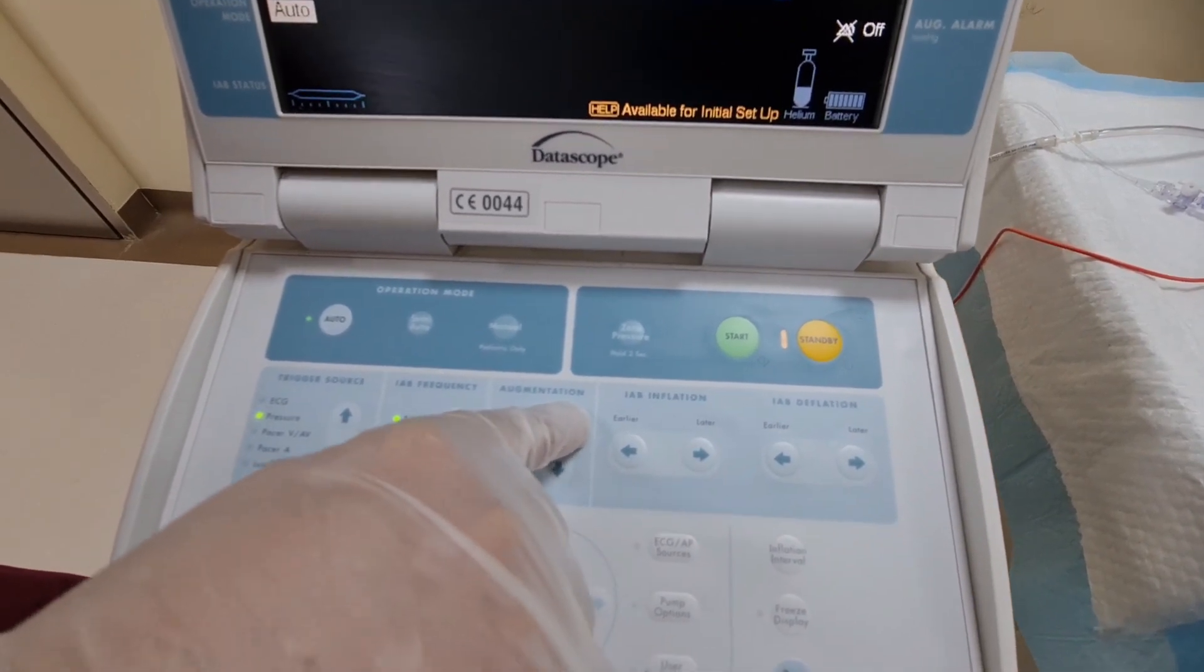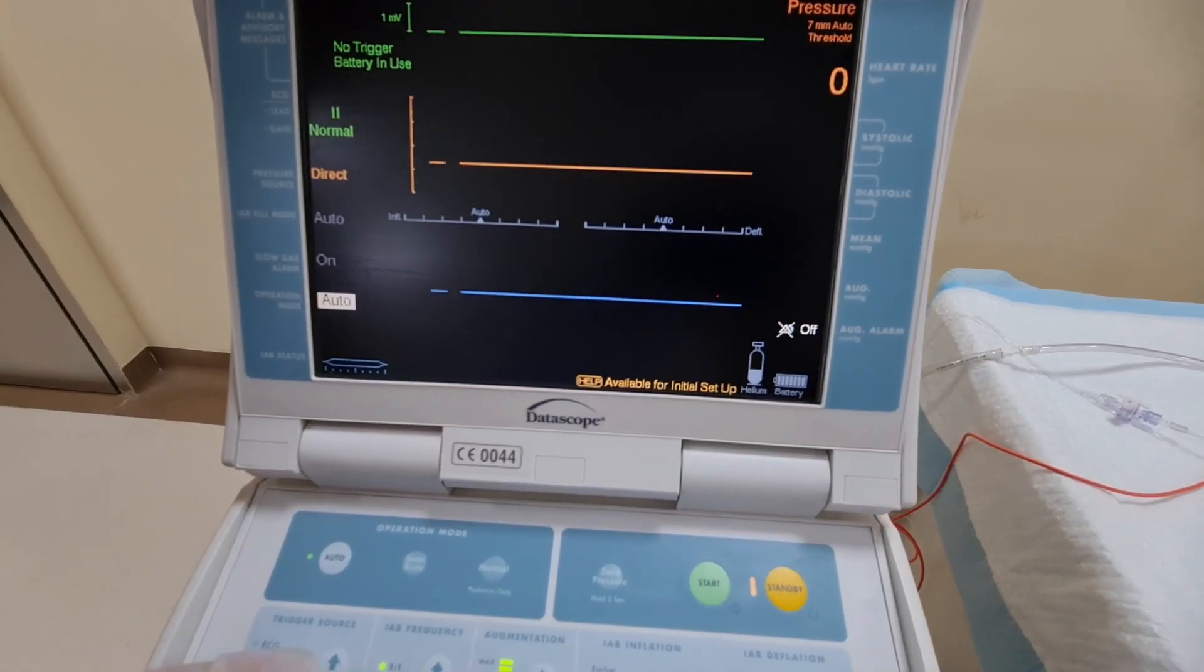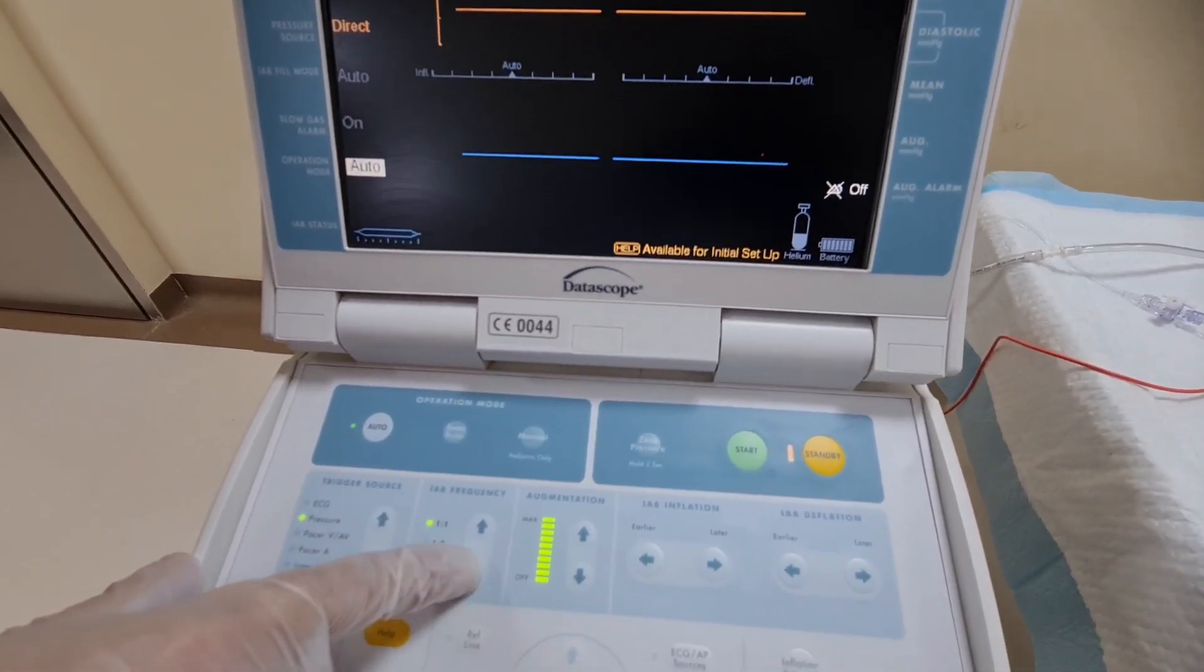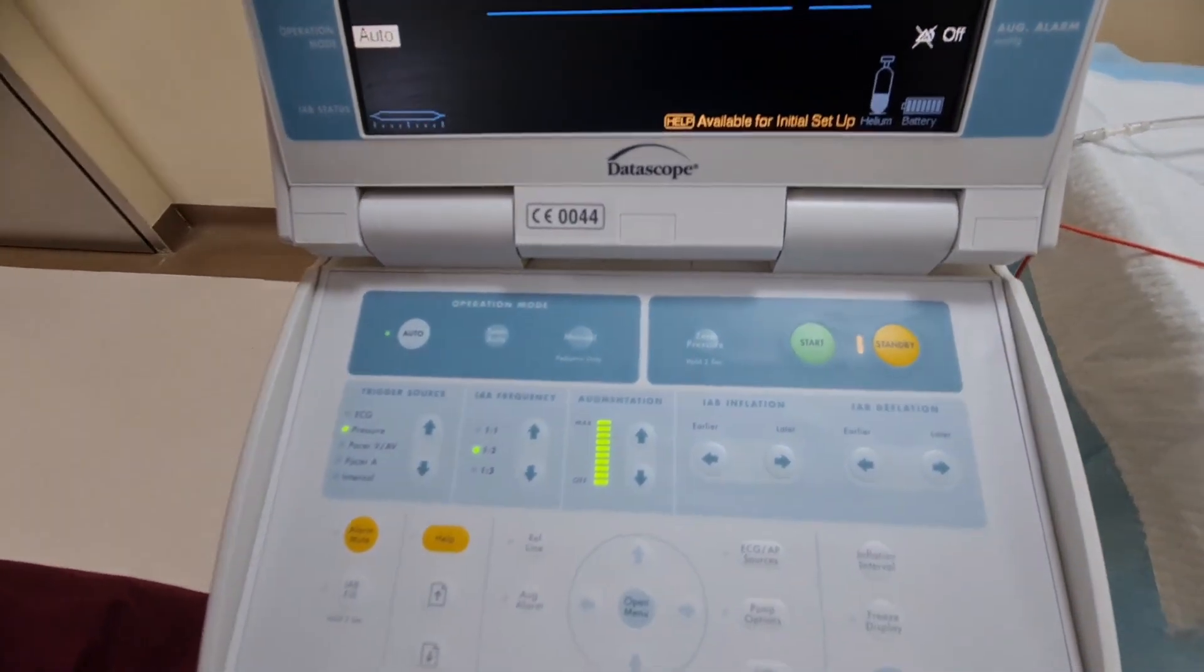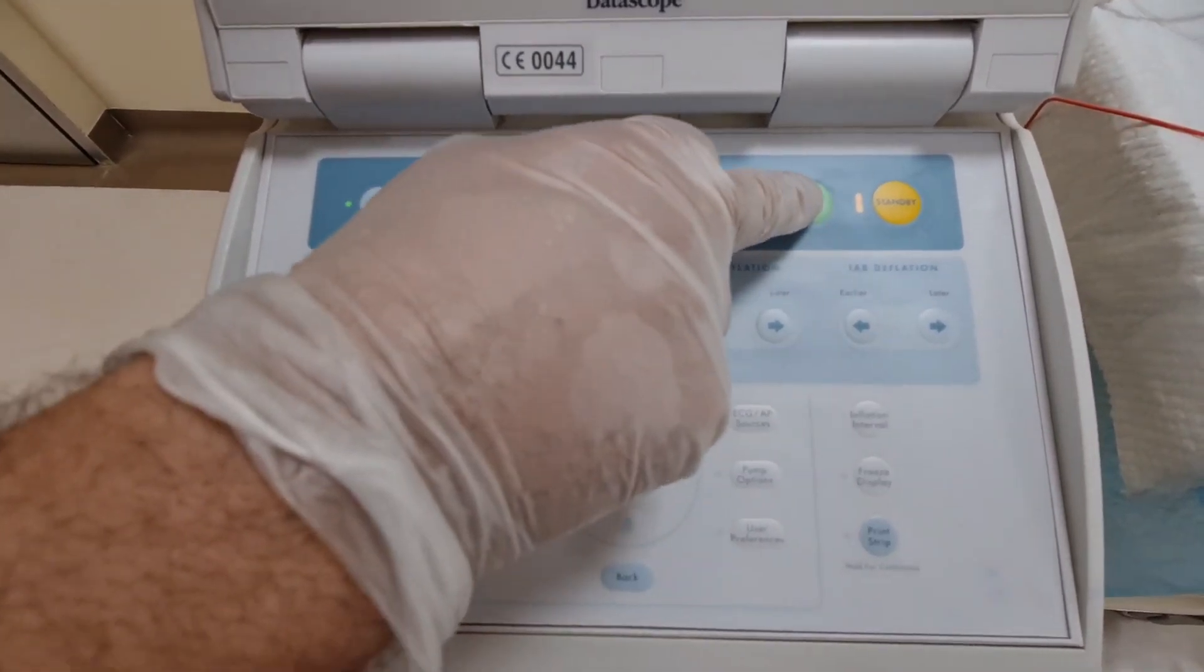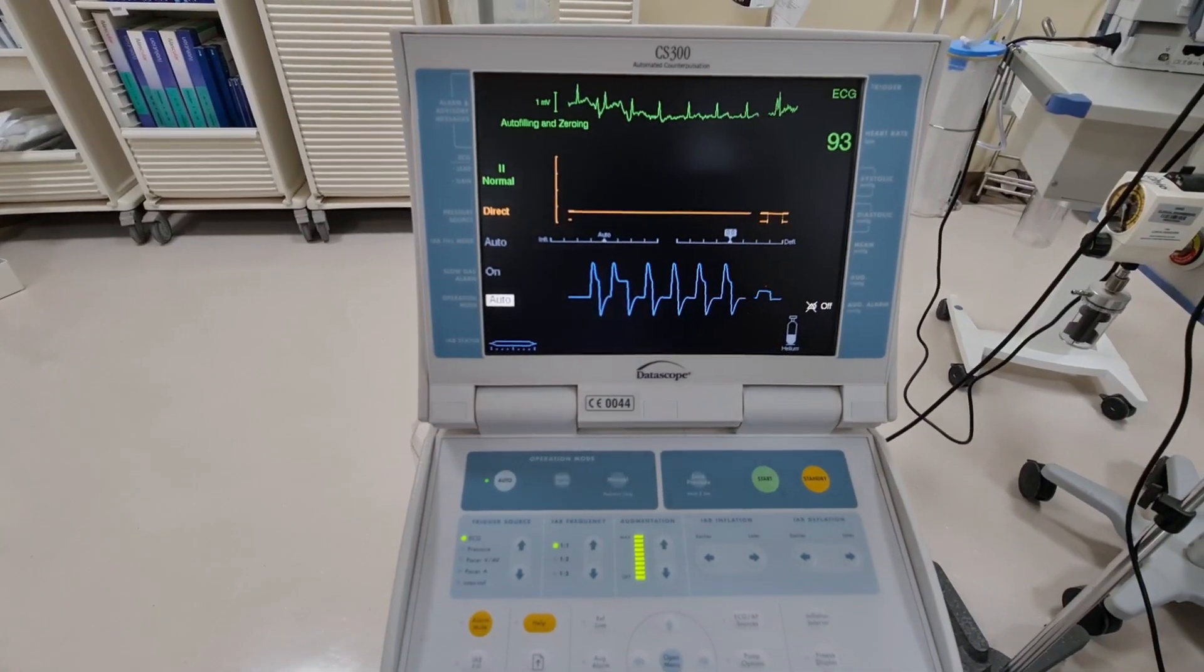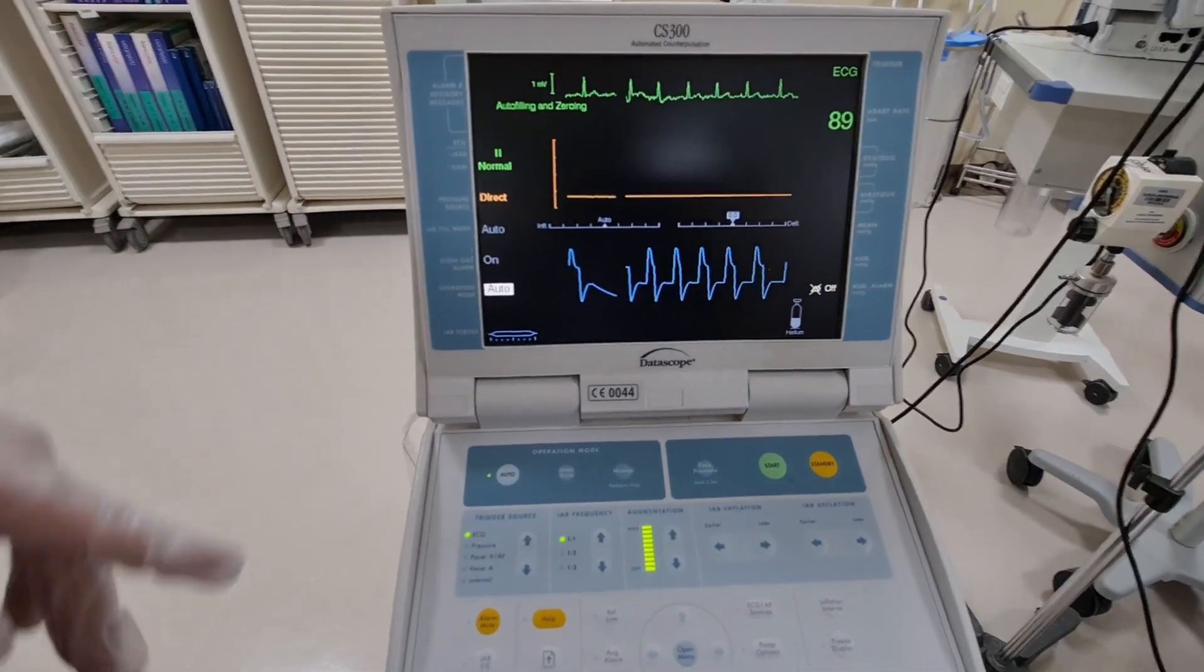Now on standby. Before you do anything, try to augment the balloon to the maximum. The augmentation rate is 1:1 or 1:2, depends. Let's put it on 1:2 now for the time being. Then after that, when you put the start button, it will ask once it's ready. Now as you can see on the screen, the IABP has started.